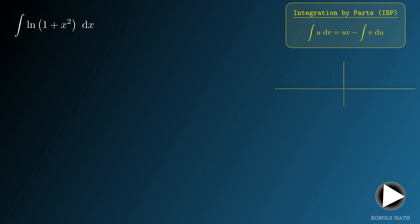So, we let u be ln of 1 plus x squared. Then we let dv be dx. This means that du is 2x over 1 plus x squared dx. Also, v must be x.